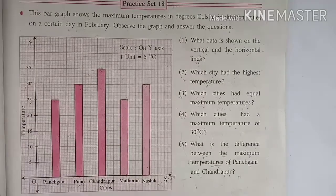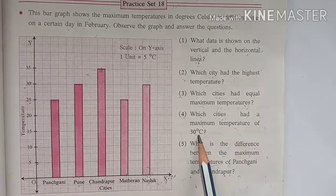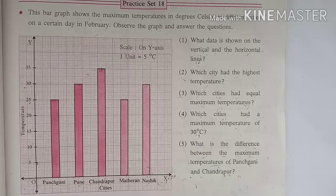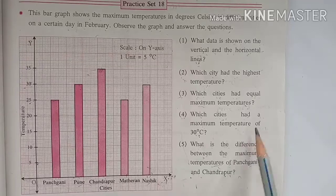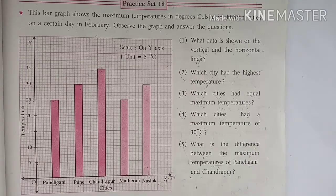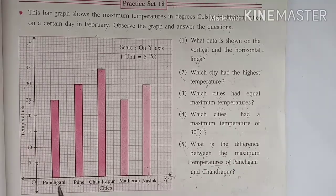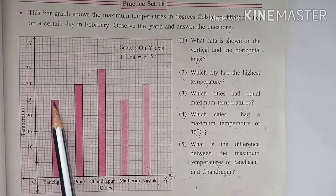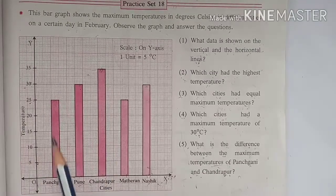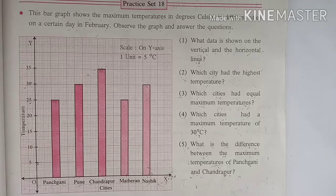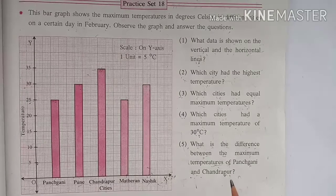Fourth question: what is the difference between the maximum temperatures of Panchagani and Chandrapur? Panchagani has 25 degrees Celsius temperature and Chandrapur has 35 degrees Celsius temperature. So 35 minus 25, that is 10 degrees Celsius. The difference between the maximum temperatures of Panchagani and Chandrapur is 10 degrees Celsius.